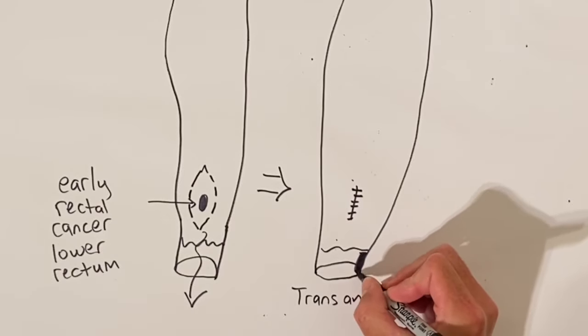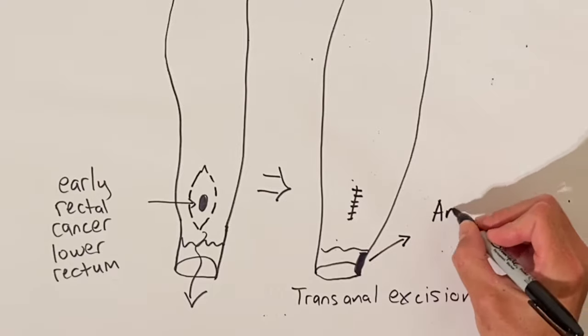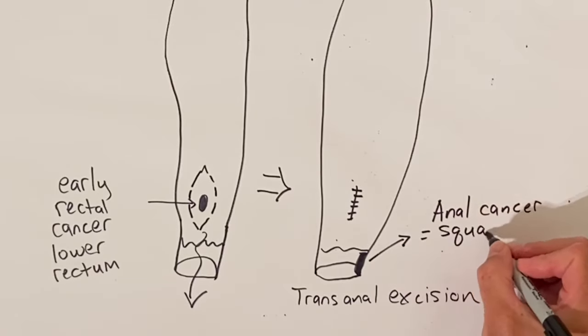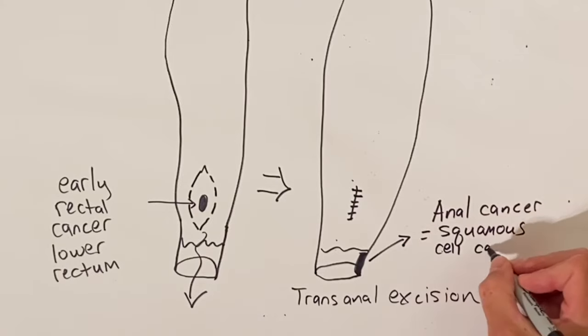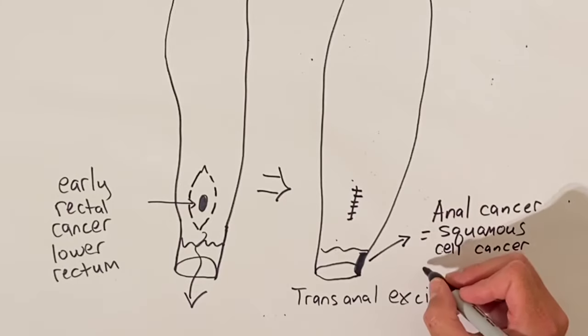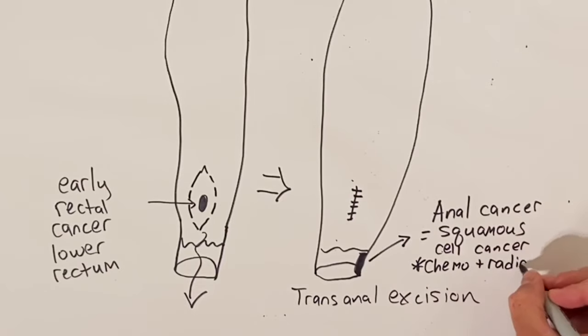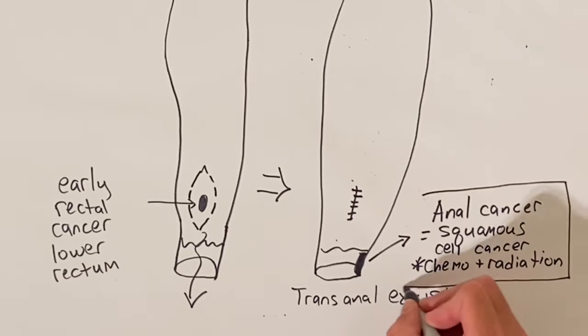Cancer of the anal canal itself is treated differently. The lining of the colon and the rectum makes adenocarcinoma type of cancer. The lining of the anal canal is a different type of cell and it makes squamous cell cancer. Anal canal cancer is usually treated with chemotherapy and radiation and usually does not need surgery.